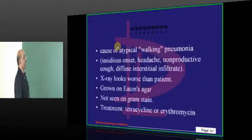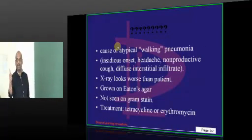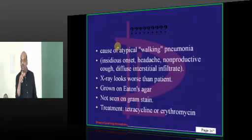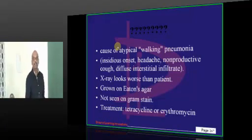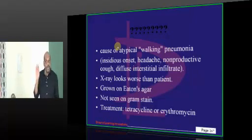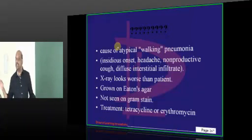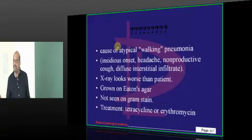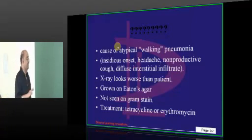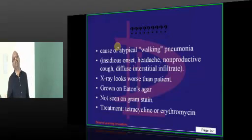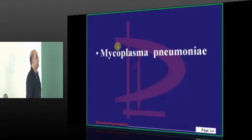Mycoplasma pneumoniae — Eaton agent. Since it doesn't have a cell wall, it doesn't stain with Gram stain. You treat it not with cell wall synthesis inhibitors, but with tetracycline and erythromycin, which are the main part of treatment — is what need to be remembered.